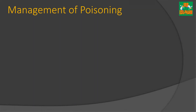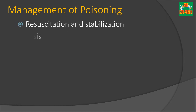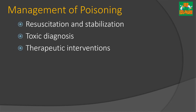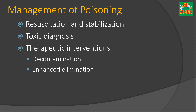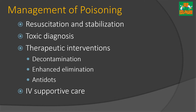Now let us know the different procedures used in the management of poisoning. The holistic management of toxic exposure should include the following considerations based on a risk assessment approach: resuscitation and stabilization, diagnosis of toxicity, therapeutic interventions like decontamination, enhanced elimination of poisonous substances, using antidotes for specific poisons, and intravenous supportive measures to remove poisonous substances from the body.